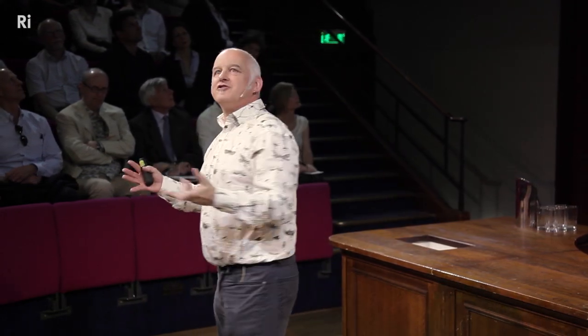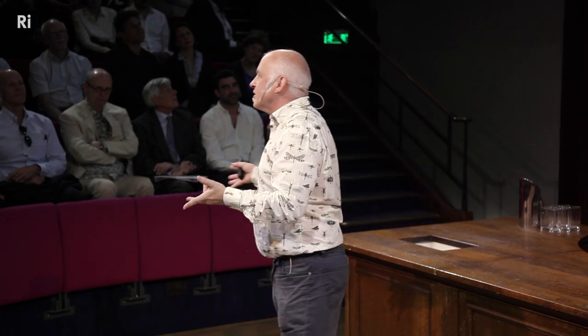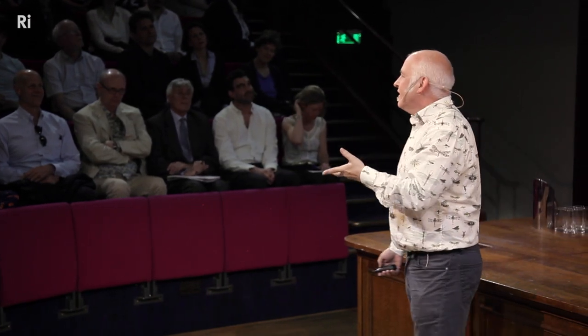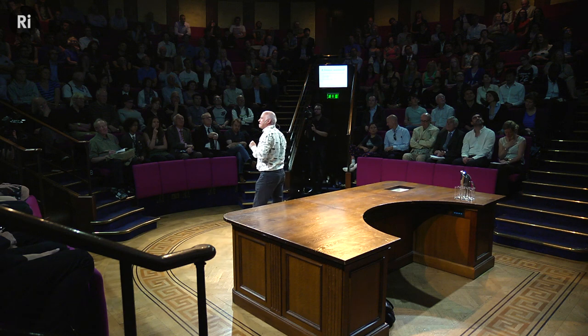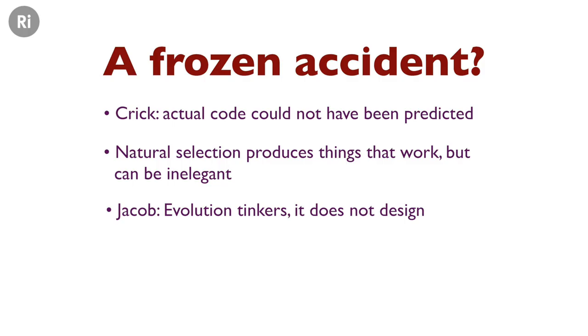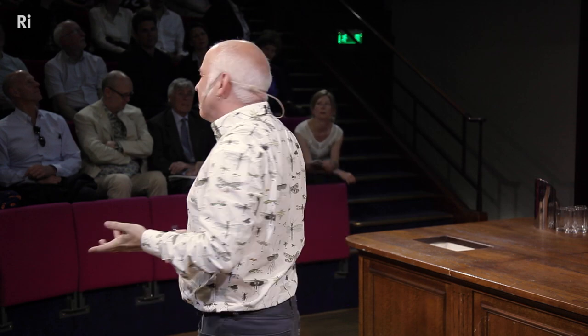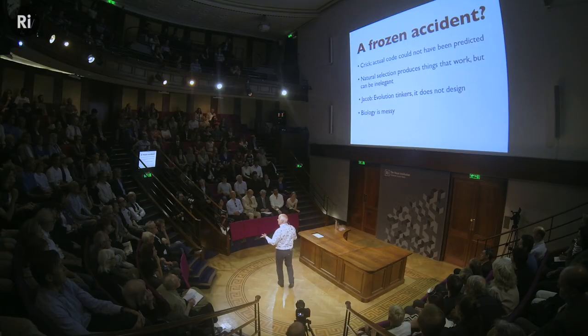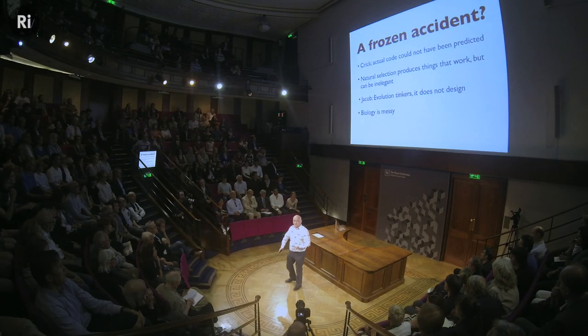And that's telling us something very important about biology. Natural selection produces things that work, but they are often extremely inelegant. You only have to look at a human skeleton to see all the bits — it hasn't been designed by anybody. As Jacob put it, evolution doesn't design, it tinkers — it gets what there is and adds to it. This is probably why the genetic code is this mixture of the rational, perhaps some chemical reaction explaining it, and then there's other stuff we can't quite explain. Biology, unlike physics or maths, is messy, and that's essentially what we have to deal with.